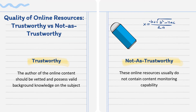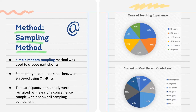As we are all aware, not everything on the internet is true since basically anyone can post activities online. There are two categories of online resources: trustworthy and not as trustworthy. To determine if an online resource is trustworthy, it's important to note if the author has been fact-checked. Not as trustworthy sites usually do not have content monitoring capability. An example of a trustworthy site would be any government education site such as the National Council of Teachers of Mathematics (NCTM), while not as trustworthy sites include Facebook, Twitter, Pinterest, and Teachers Pay Teachers.